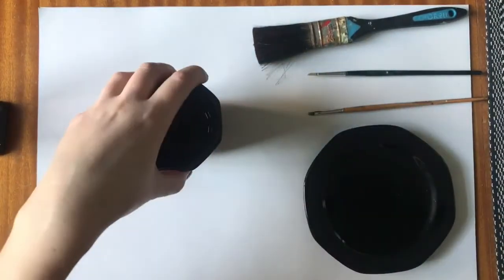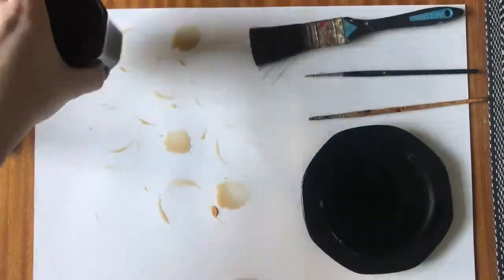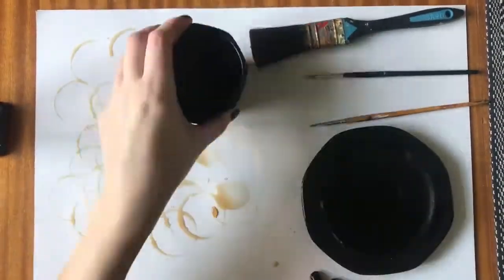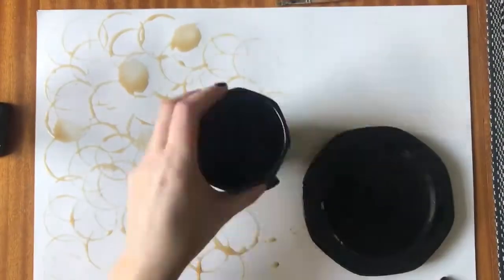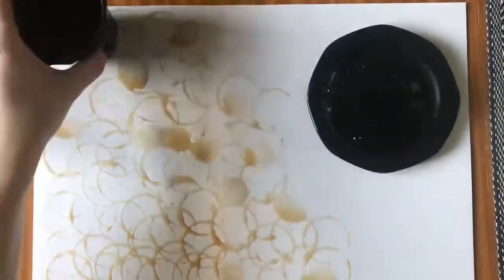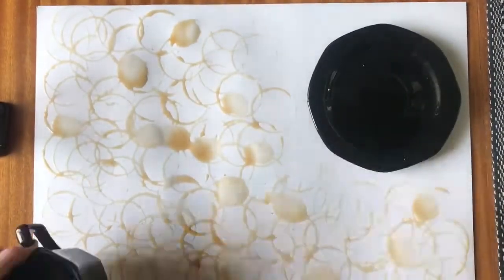You just need to pour some of the coffee out onto the saucer so you have it on the bottom rim of your cup, and then I'm just using the cup to create these coffee ring stains all over the sheet of paper.